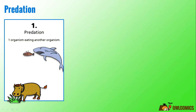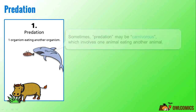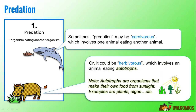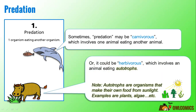Let's start with predation. Predation involves one organism eating another organism. Sometimes predation may be carnivorous, which means it involves one animal eating another animal. Or it could be herbivorous, which means it involves an animal eating autotrophs.